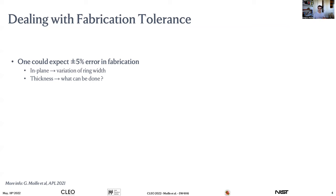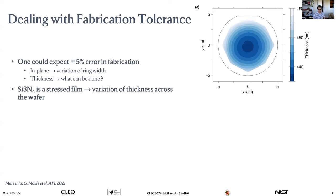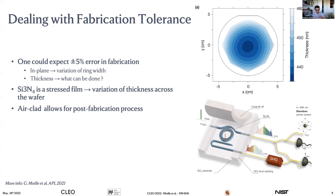Silicon nitride is a stress film, meaning there is a large thickness variation across the wafer. For a 4-inch wafer, you can see variation from 430 to 460 nm depending on where you fabricate your chip. You cannot control thickness before fabrication — so the question is: can you control it after?